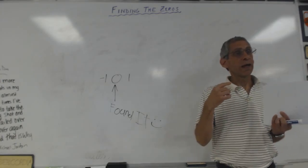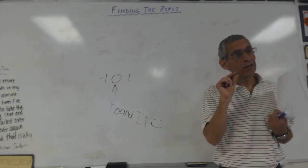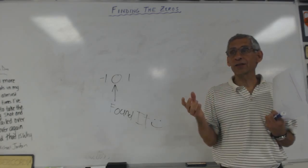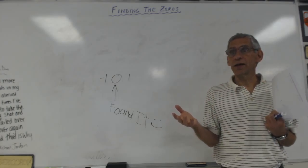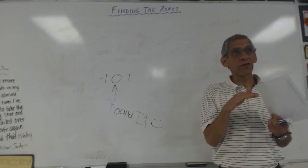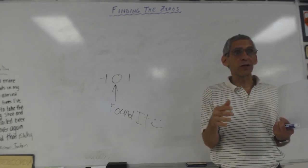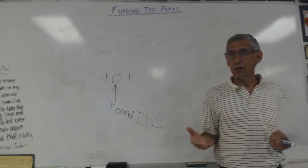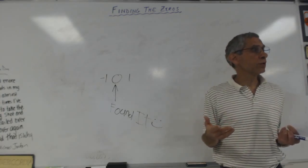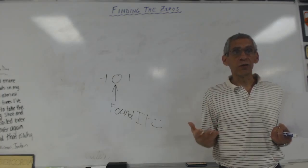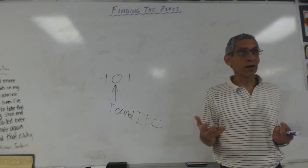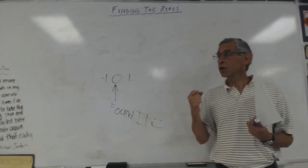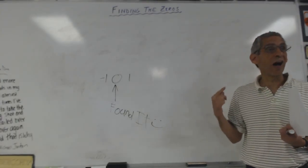So just by putting an equal sign in, it gives you permission to actually do something with it, right? Suddenly, before, when you're just factoring, you've just got an expression — you can factor it, but it doesn't really mean a lot. There's not much you can do with it. As soon as we put an equal sign, there's something you can do with it. It's actually useful. And one of the most important, most useful things you can do is find the zeros.